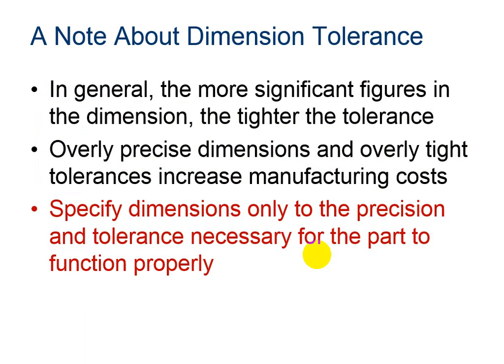In general, the more significant figures in the dimension, the tighter the tolerance. Overly precise dimensions and overly tight tolerances increase manufacturing costs. So we want to be careful in how we choose what tolerances we define for our parts. Specify dimensions only to the precision and tolerance necessary for the part to function properly.